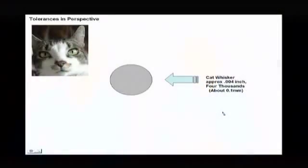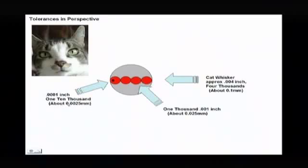For example, pick up your page - how thick is the page in your workbook? This here is your cat whisker. When people talk about tolerancing to a thousandth of an inch, we're talking about quarters of cat whiskers, some really small stuff. People talk about a ten thousandth of an inch - how small is that? Compared to a cat whisker, some really small things.